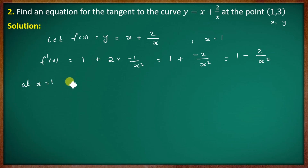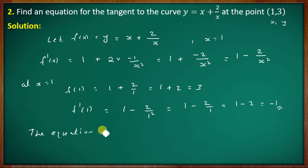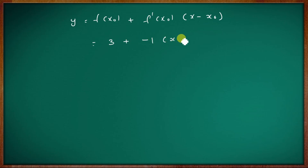At x = 1: f(1) = 1 + 2/1 = 3, and f'(1) = 1 − 2/1 = −1. The equation of the tangent line is y = f(x₀) + f'(x₀)·(x − x₀) = 3 + (−1)(x − 1) = 3 − x + 1 = 4 − x.